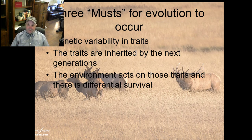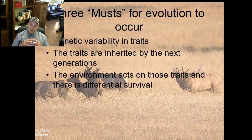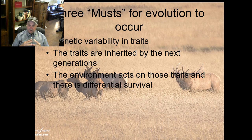This is important for you to learn. There are three musts for evolution — this is how it occurs. First, there is genetic variability in traits. You and I and all of us look different because of different genes, and those genes cause traits whether it be hair color, eye color, skin color, height, etc. Second, these traits are inherited by the next generation. You got your DNA from your mom and dad — 50% from each — and that causes traits like hair color, eye color, and height. You will pass those genes on to your offspring.